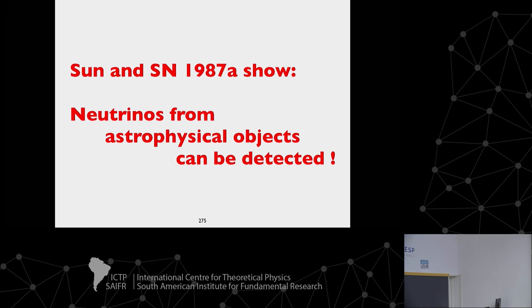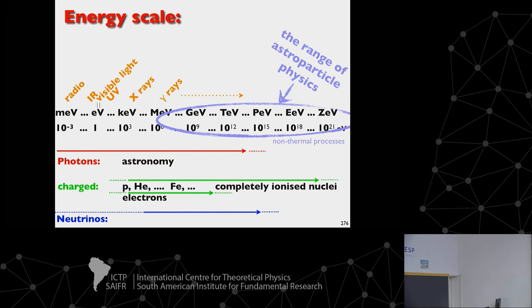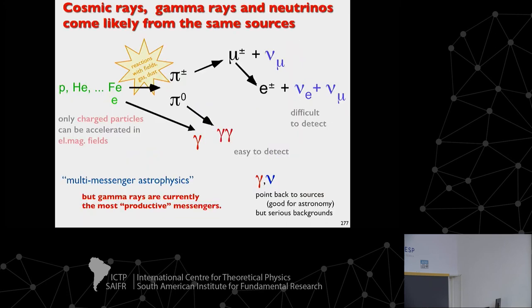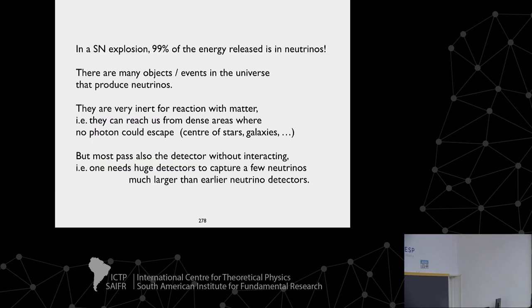It is clear that neutrinos from astrophysical objects can be detected — neutrino astronomy is possible, it's just a matter of building the right detectors. We see cosmic rays up to 10²⁰ eV, so there must also be neutrinos well above the MeV range. Indeed, a few years ago, the energy range from around 100 GeV to a few PeV was explored by the IceCube experiment.